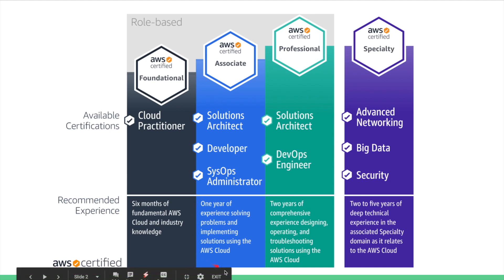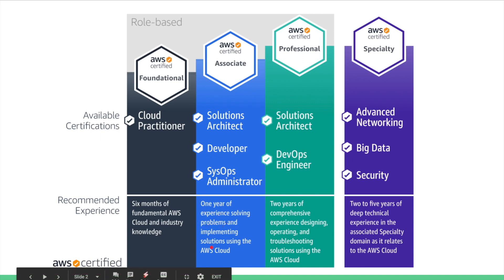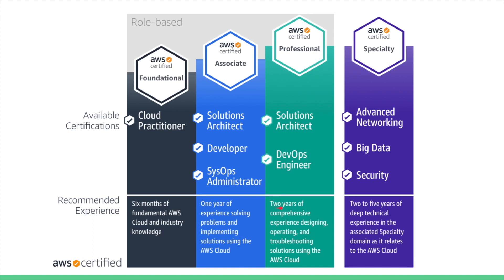Here's the recommended experience that AWS expects from someone facing this exam: one year of experience in solving problems and implementing solutions using AWS cloud. And the next pillar is the professional pillar, which requires at least two years of comprehensive experience in designing, architecting, and troubleshooting solutions using AWS cloud. It's always recommended to obtain an associate certification, gain more experience, and then move on to the professional level.